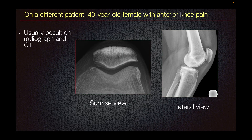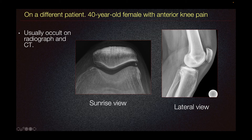This is a different patient who presented with anterior knee pain. In patients with patellofemoral pain syndrome, x-rays could be obtained to exclude any other bony abnormality. However, patellofemoral pain syndrome is usually occult on radiograph because joint space is usually preserved until there is significant cartilage loss.